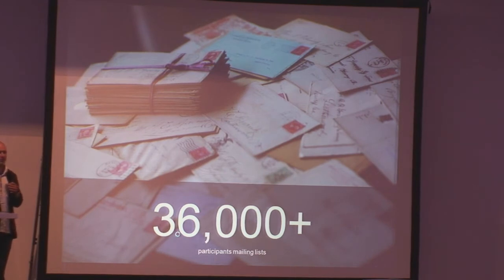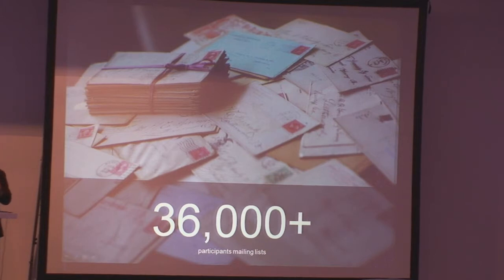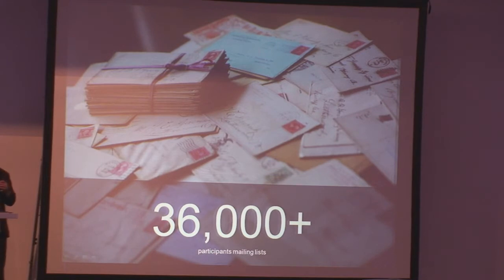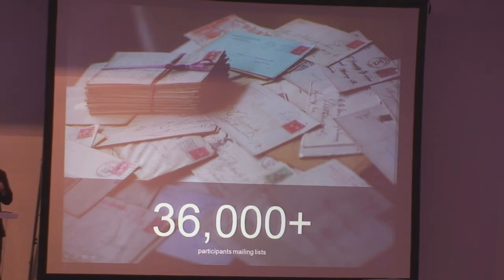The other interesting thing is the impact we can make when we want to send out information and help influence and move people forward. The mailing list that we have has over 36,000 individuals on those lists. And when you think about the application security community — sometimes known as the community of 0% unemployment — that's a pretty amazing number. We have that much reach and we can really share these ideas, documents, projects, and chapters to that many people with a lot of ease.